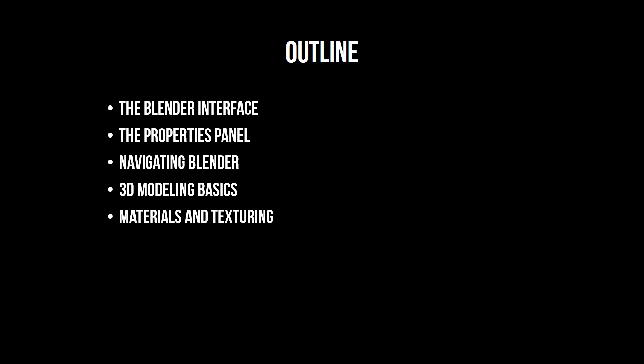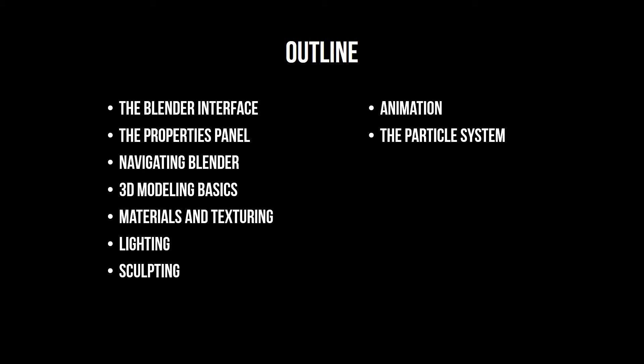We will also look at giving our 3D objects materials and textures. We cover lighting to help light up our 3D world. We then learn how to carve our objects if we can't model them well, through sculpting tools. We learn basic animation, as well as the particle system for creating hair, fur, rain, fireworks, and so on. We look at the physics system in Blender to help us simulate real world physics.